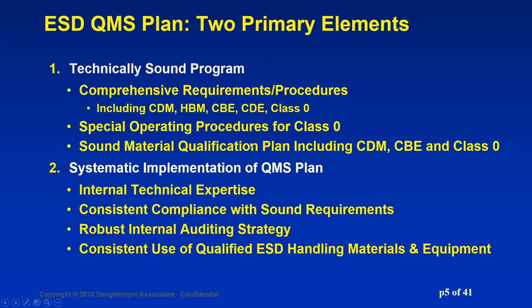The other piece is the QMS plan — the implementation of a robust plan — and this is where it usually falls down. To do this, you have to have internal expertise; it's vitally important to have that on hand to deal with issues as they come up. You also have to develop a means of consistently complying with sound requirements. If you can't follow the procedures, you can't have an effective program. There is a need for a very robust internal auditing strategy, and consistent use of qualified materials.